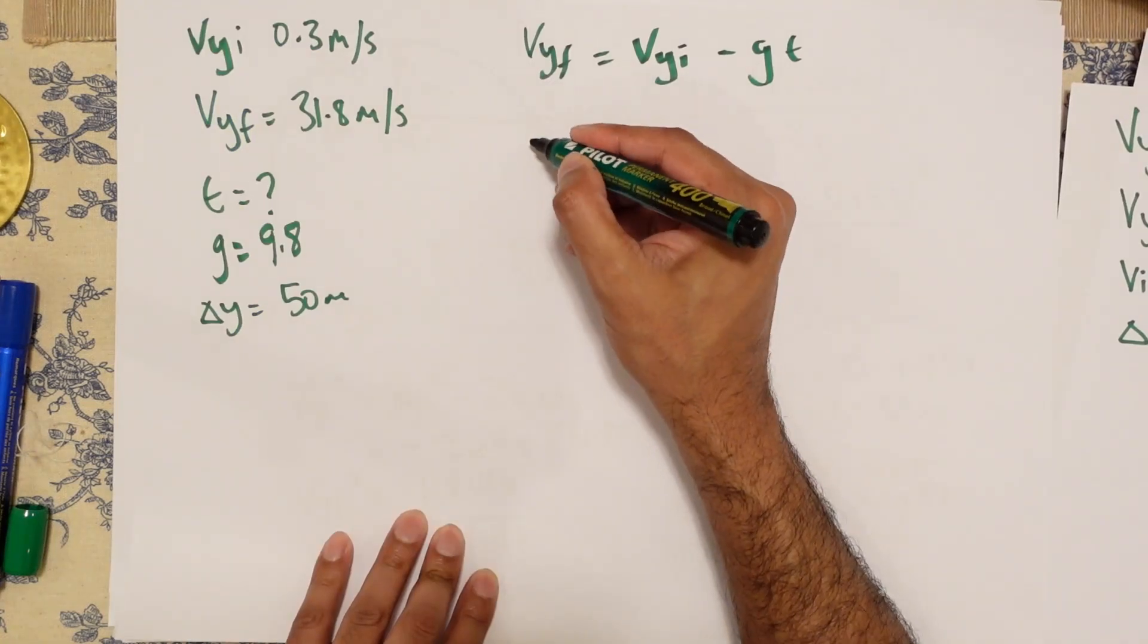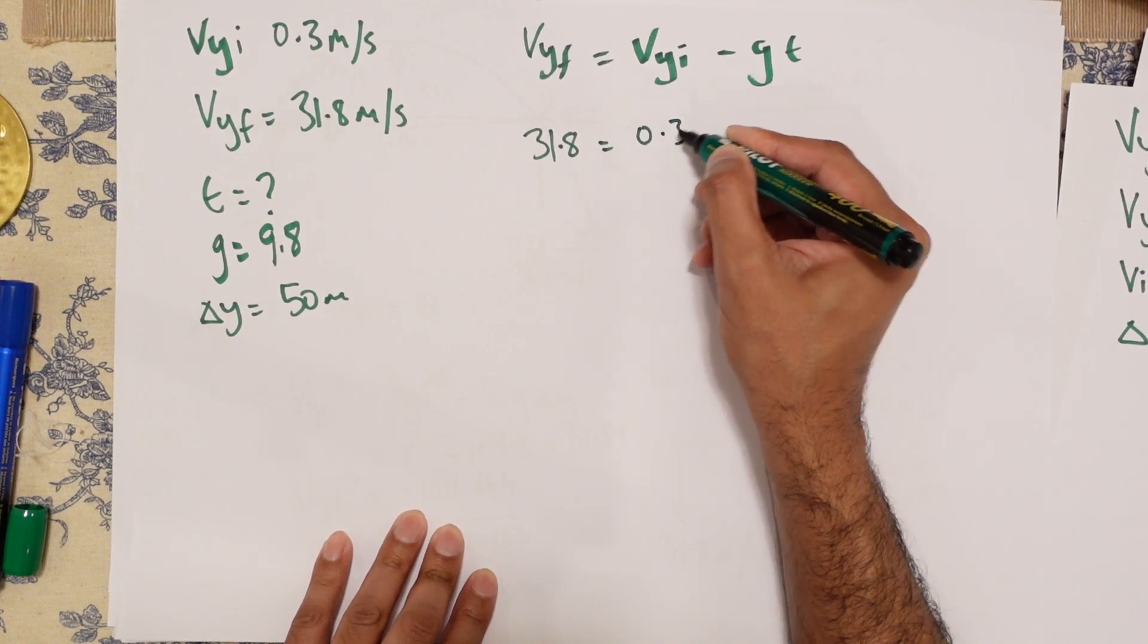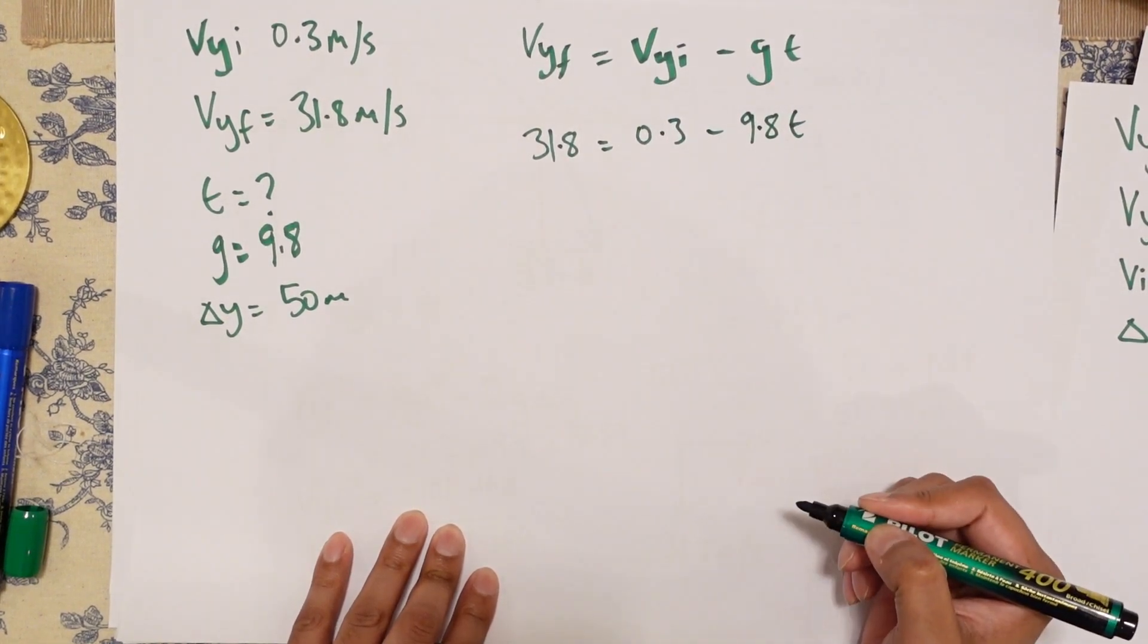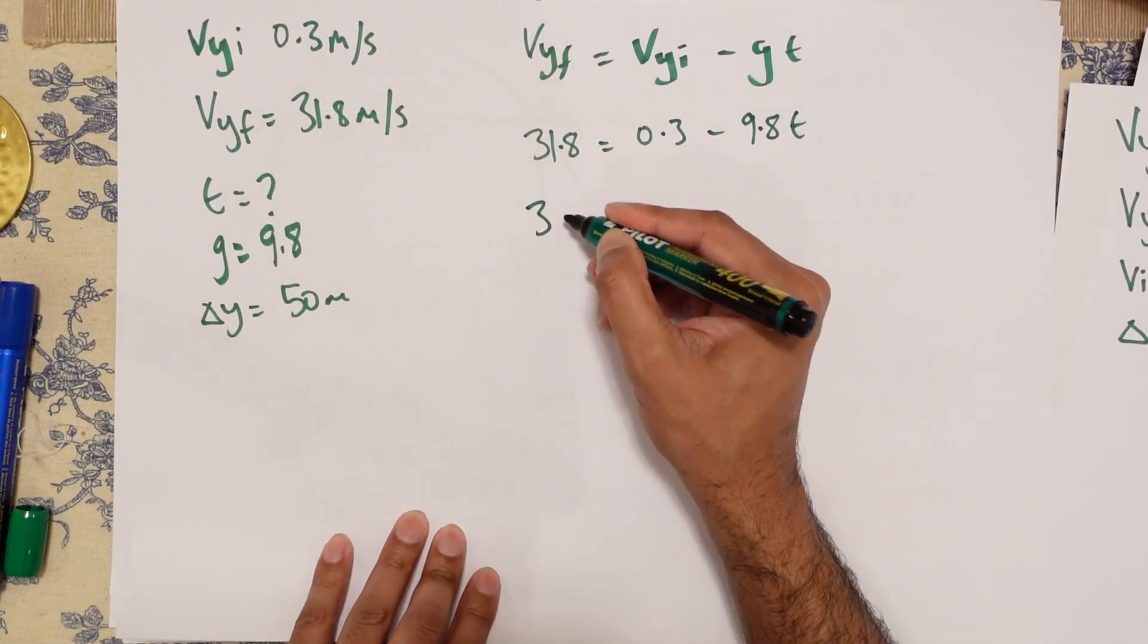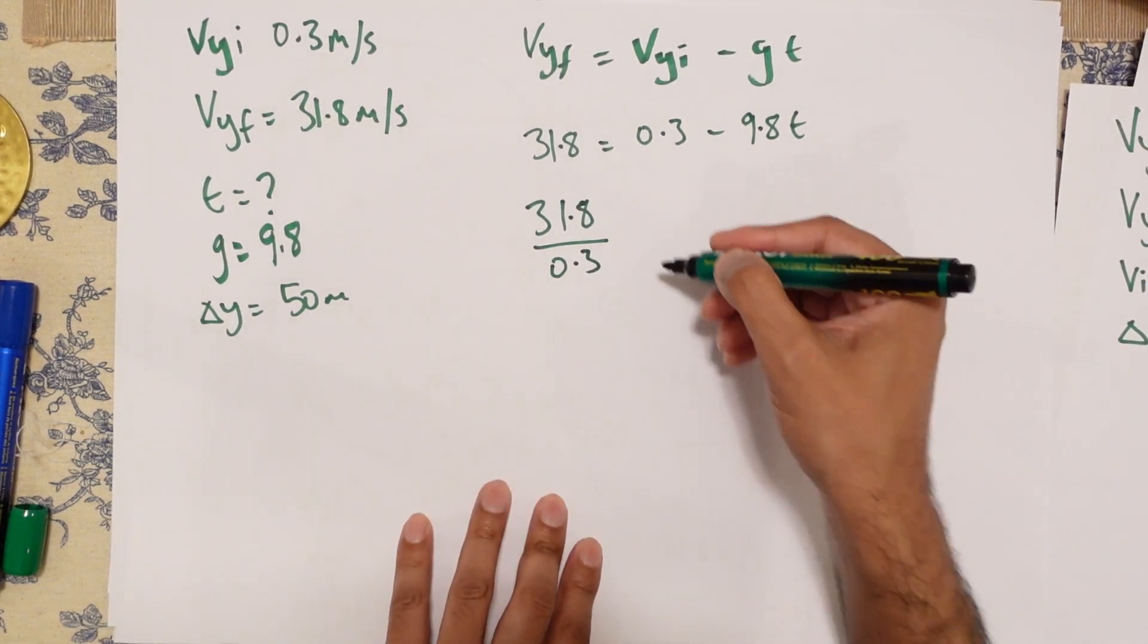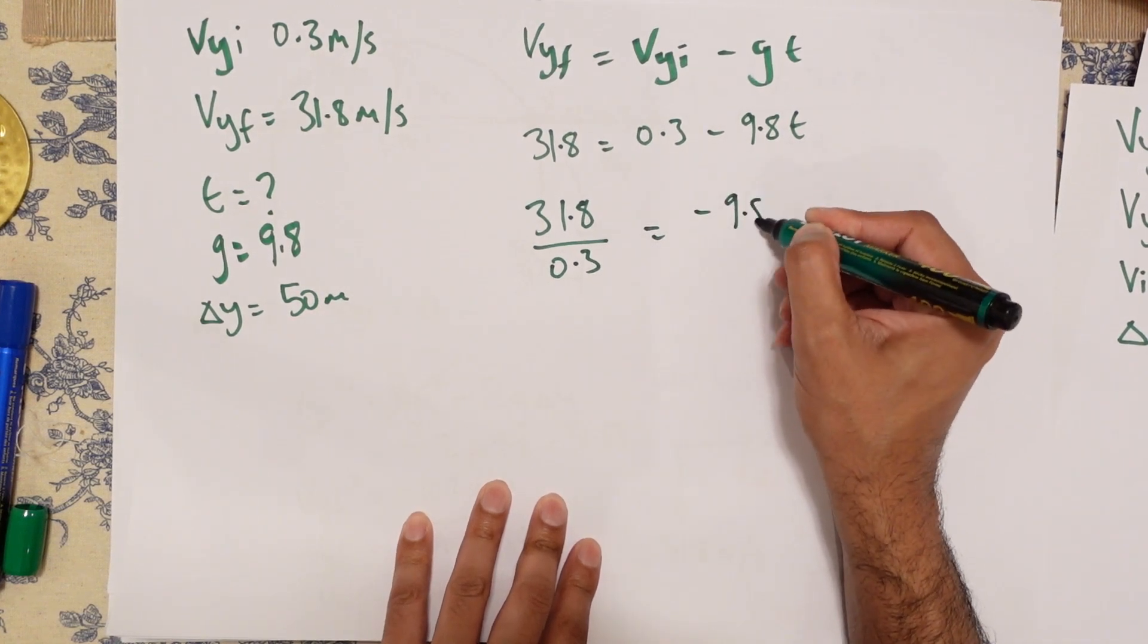So that one was 31.8 is equal to 0.3 minus 9.8 T. So you divide this by 0.3, 31.8 divided by 0.3, and then equals minus 9.8 T. Let's work this bit out.